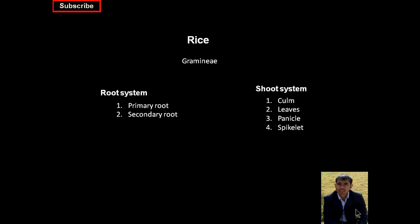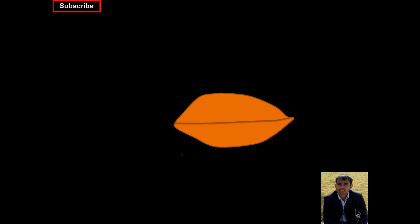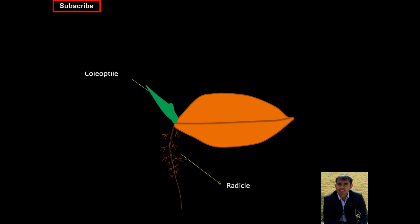When we grow the rice seeds in moist soil, first of all there will be emergence of the coleorhiza and shoot system, then followed by the radicle system. And then the coleoptile will also emerge.